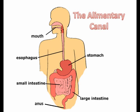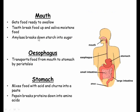This process begins in the mouth, where teeth break food up into pieces small enough to swallow and saliva moistens the food. Saliva also contains the first enzyme of the digestive system, amylase, which breaks starch into sugar.